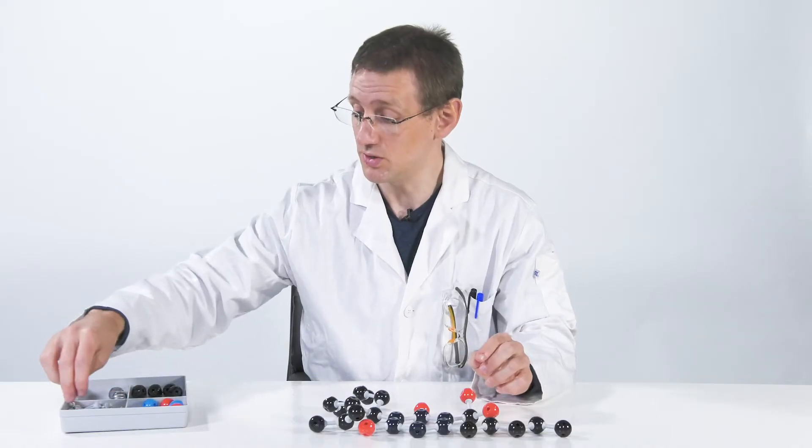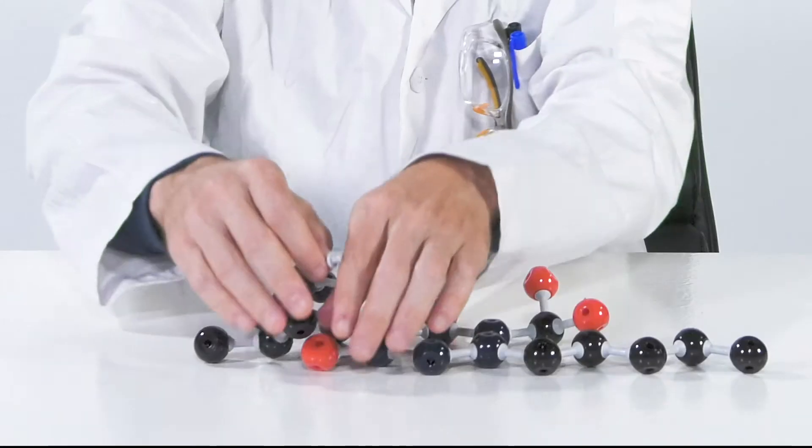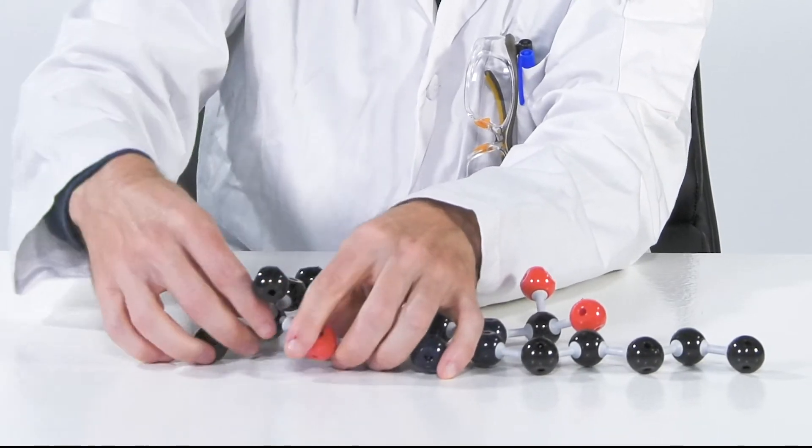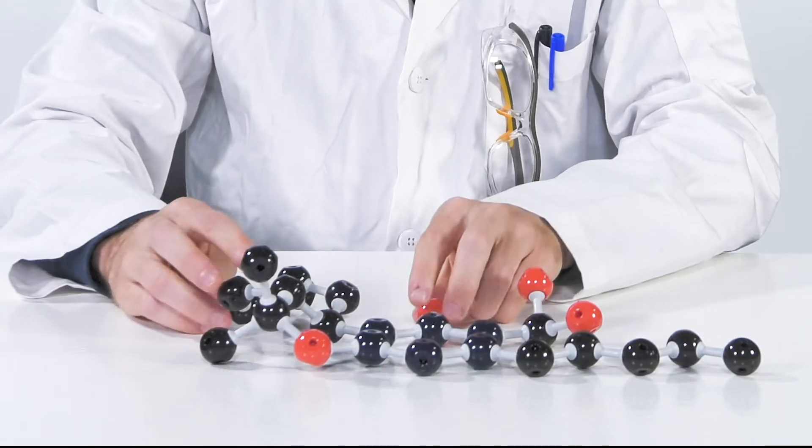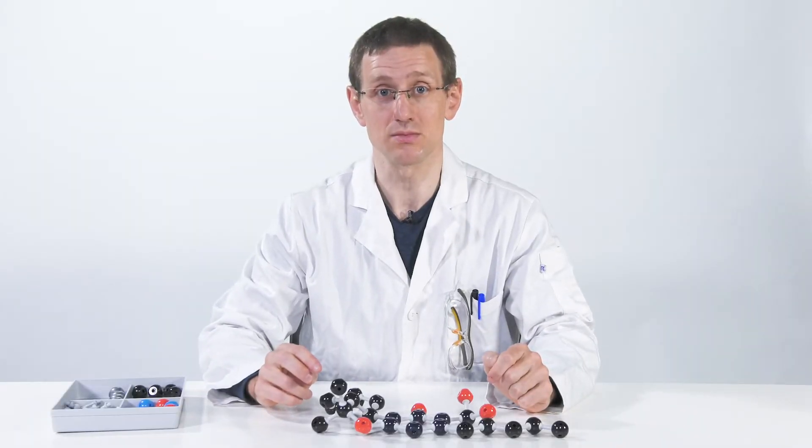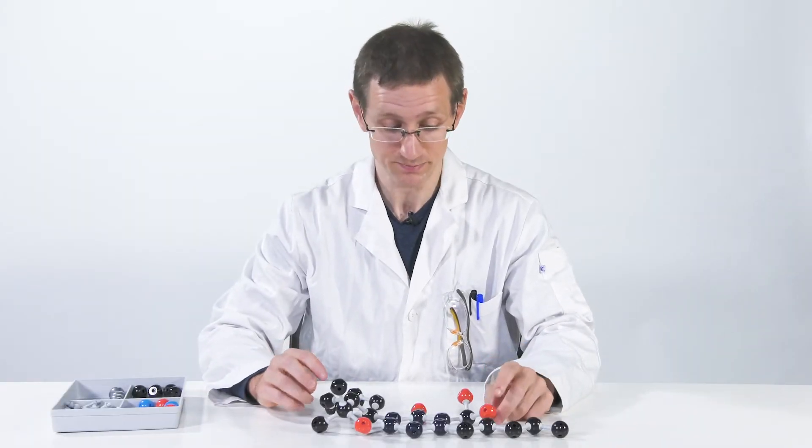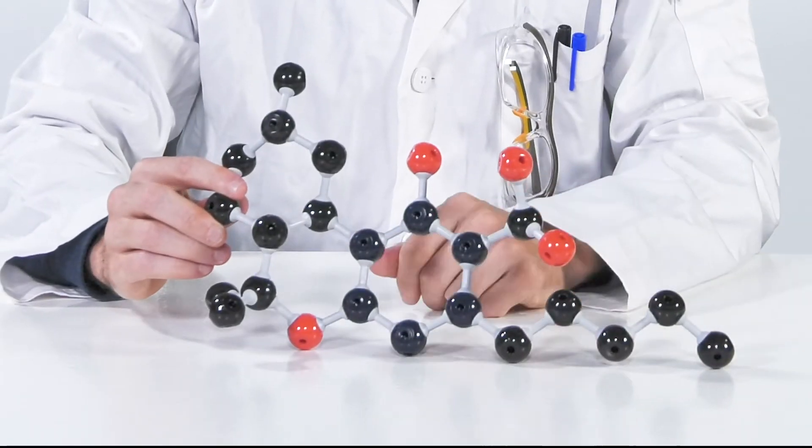And for THC, we need one more bond. And please remember, this is an oversimplification of how these bonds are actually made. Biology creates them with enzymes, and it's a little bit more complicated. So this is now THC acid.